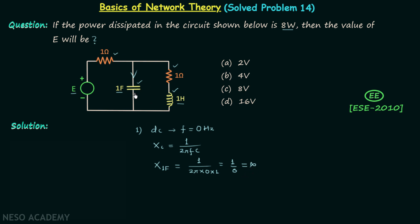So the capacitor will offer infinite reactance to the current flow, and therefore it will act as open circuit. On the other hand, if we focus on the inductor, the inductor will offer 0 reactance.